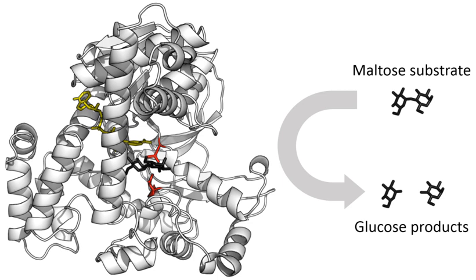Some enzymes do not need additional components to show full activity. Others require non-protein molecules called cofactors to be bound for activity. Cofactors can be either inorganic — e.g., metal ions and iron-sulfur clusters — or organic compounds — e.g., flavin and heme. These cofactors serve many purposes; for instance, metal ions can help in stabilizing nucleophilic species within the active site. Organic cofactors can be either coenzymes, which are released from the enzyme's active site during the reaction, or prosthetic groups, which are tightly bound to an enzyme.